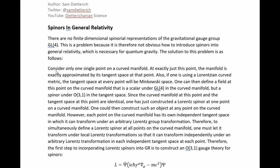The solution is as follows. Consider only one single point on a curved manifold — at exactly this point, the manifold is exactly approximated by its tangent space. If one is using a Lorentzian curved metric, the tangent space at every point will be Minkowski space. One can then define a field at this point that is a scalar under GL(4) in the curved manifold, but a spinor under O(3,1) in the tangent space. Since the curved manifold and the tangent space at this point are identical, one has just constructed a Lorentz spinor at one point on a curved manifold.